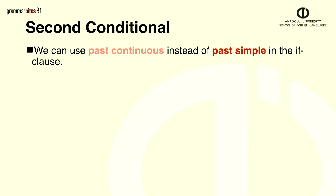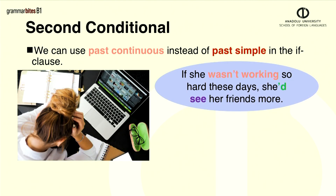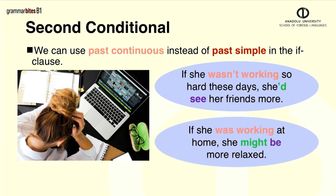In the if clause, we can also use the past continuous tense to focus on an action in progress. If she wasn't working so hard these days, she'd see her friends more. If she was working at home, she might be more relaxed. Maybe she would be more relaxed. Maybe not.